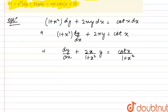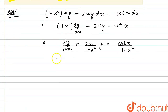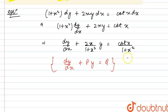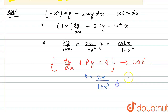Now just compare this equation with the equation of the form dy by dx plus py is equals to q, where p and q are only functions of x. This is a linear differential equation, where we have the value of p as 2x divided by 1 plus x square and the value of q as cot x divided by 1 plus x square.